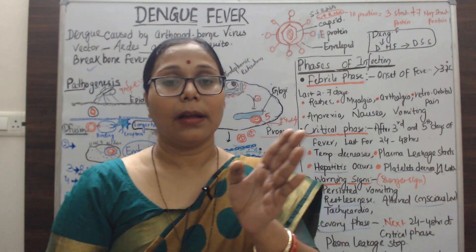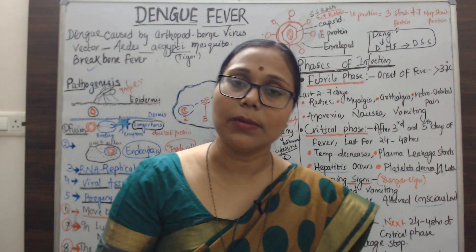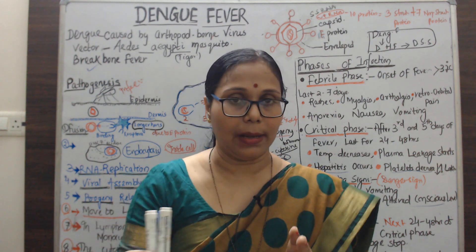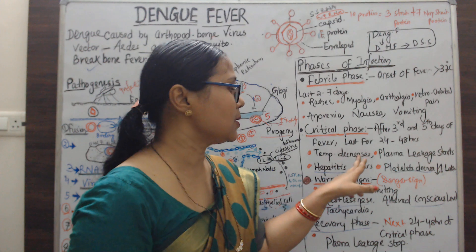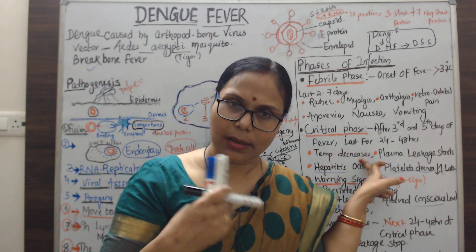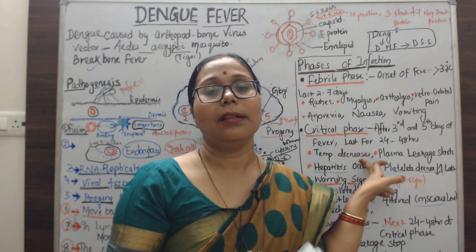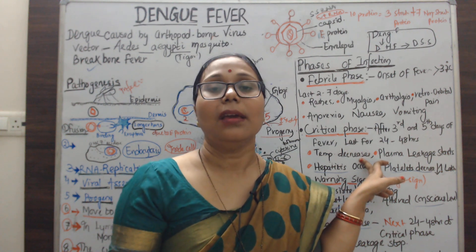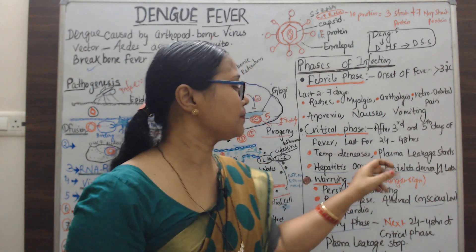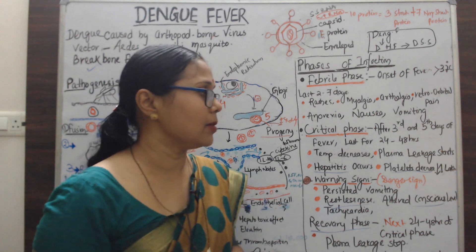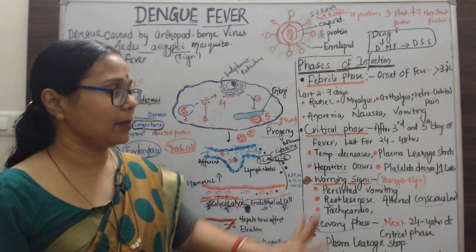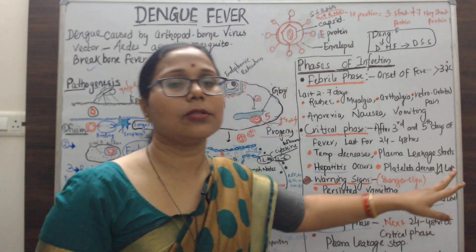After the febrile phase comes the critical phase. Around the third to fifth day, the temperature suddenly decreases, but plasma leakage starts and hemostasis becomes imbalanced. Unlike common fever or upper respiratory infections, dengue fever does not present with running nose, nasal congestion, or sore throat. When temperature reduces, plasma leakage begins, hepatitis occurs as the parenchymal cells are affected, and platelet levels decrease due to reduced thrombopoietin supply.